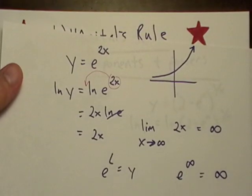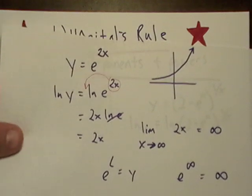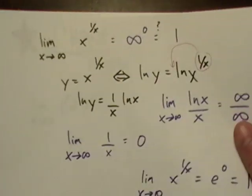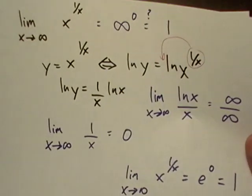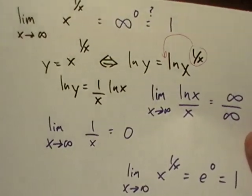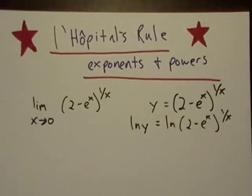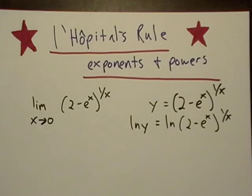Basically we want to get rid of this power, the exponent, the same thing we did here. We took the natural log and then we took the limit. The only thing we have to really remember to do is since we're taking the natural log of one of these functions, our limit is not technically the answer. We have to raise that limit, well we have to raise e up to that limit.